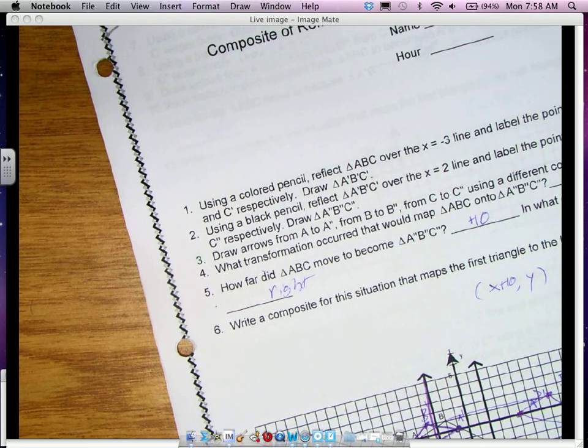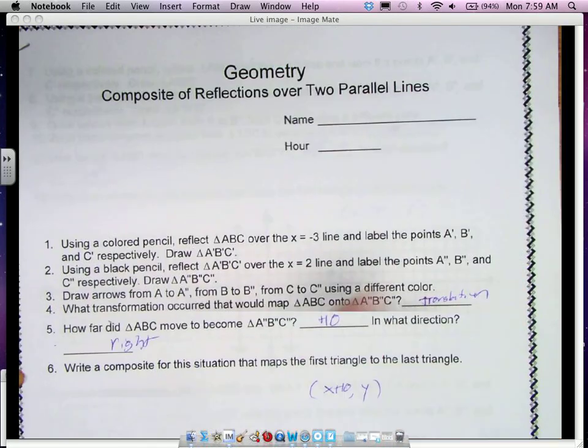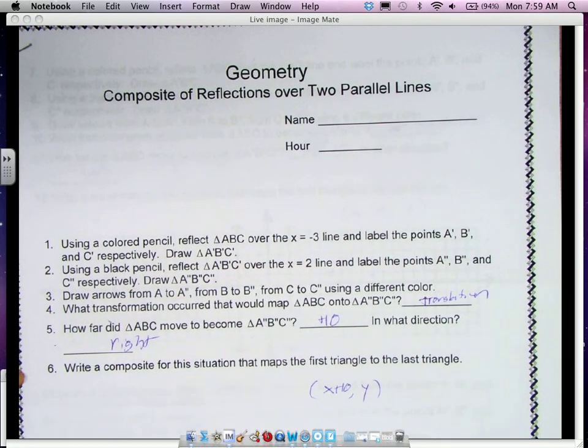Alright, ladies and gentlemen, we're looking at the composite of reflections over two lines. So a composite just means two transformations performed together. This is two reflections.